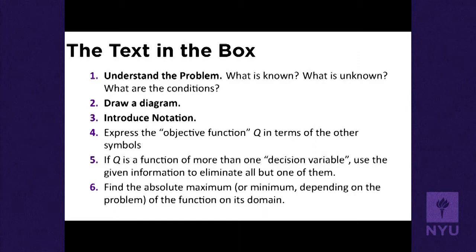Step one is to understand the problem: what is known, what is unknown, what are the conditions? This is what students find so daunting about story problems — that's the first step, understanding the problem, articulating what is known, what is unknown, and what the conditions are. Drawing a diagram is not optional, especially if you're optimizing something geometric. Introduce notation — make variables for the things which are actually varying. With our rectangle, we made a variable for the length and a variable for the width, and a constant P for the perimeter.